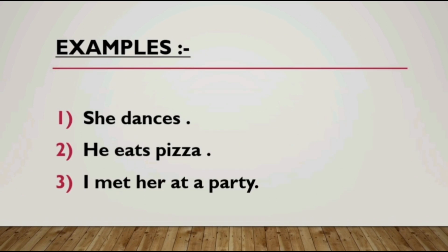Let's have a look at these examples. The first one is 'She dances' — here 'dances' is the verb, so it is the predicate on its own, since a predicate may contain only a verb. The next example is 'He eats pizza' — here there is a verb 'eats' and an object 'pizza,' showing a predicate can contain a verb and an object. The third example is 'I met her at a party' — here 'met' is the verb, 'her' is the object, and 'at a party' is an adverbial modifier telling us where the meeting happened.